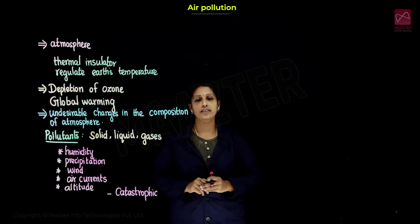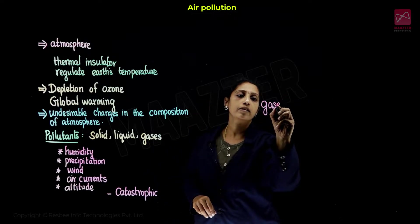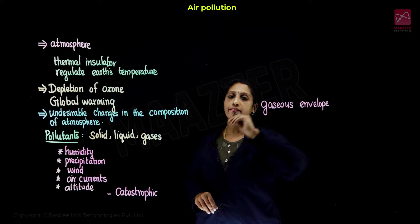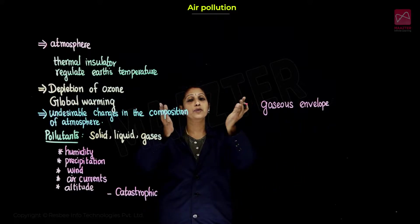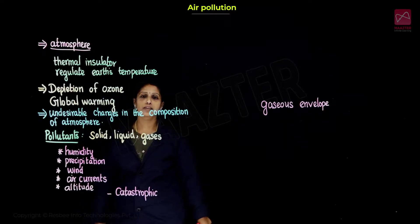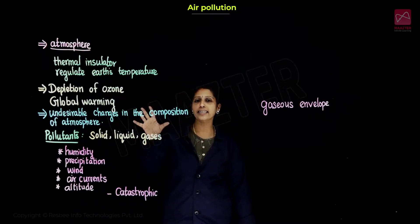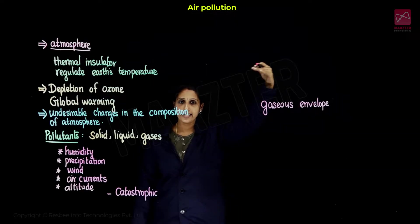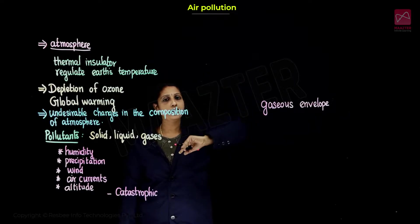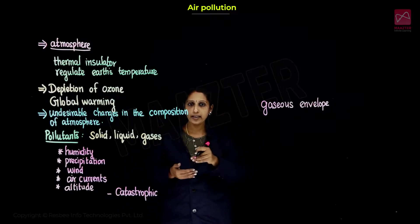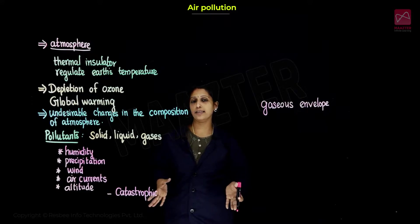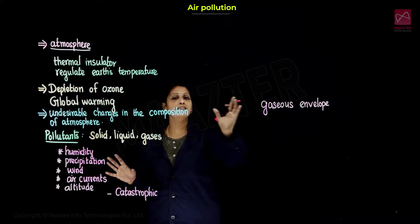The atmosphere is a gaseous envelope that surrounds the earth. If you look at this layer, there are a lot of rays in sunlight — the first is ultraviolet rays. If there were no atmosphere, human beings would have a lot of problems — skin disease and other problems. That is why we need to protect this layer and envelope.